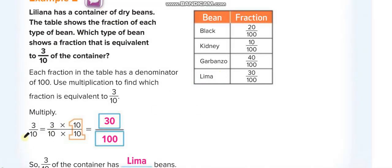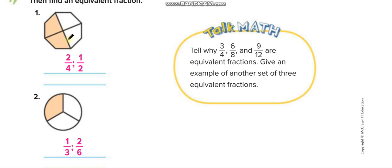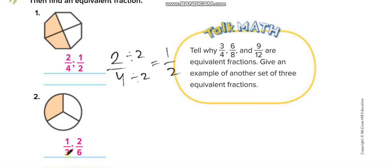Looking at this visual example: total four parts, two are shaded — so two over four. To create its equivalent fraction, they divided by two: two divided by two is one, four divided by two is two, giving one over two. Similarly, in the next picture, total parts are three, one part is shaded — so one over three. They created an equivalent fraction by multiplying by two: one times two is two, three times two is six.